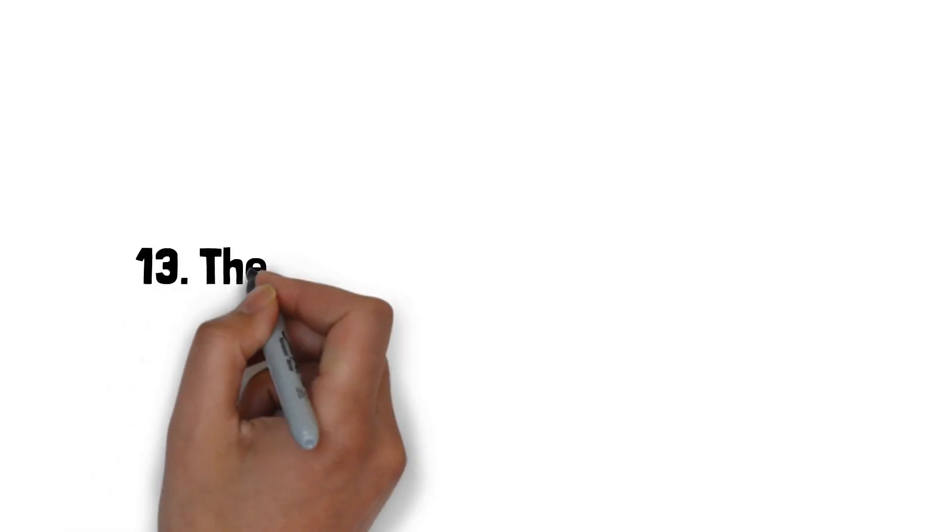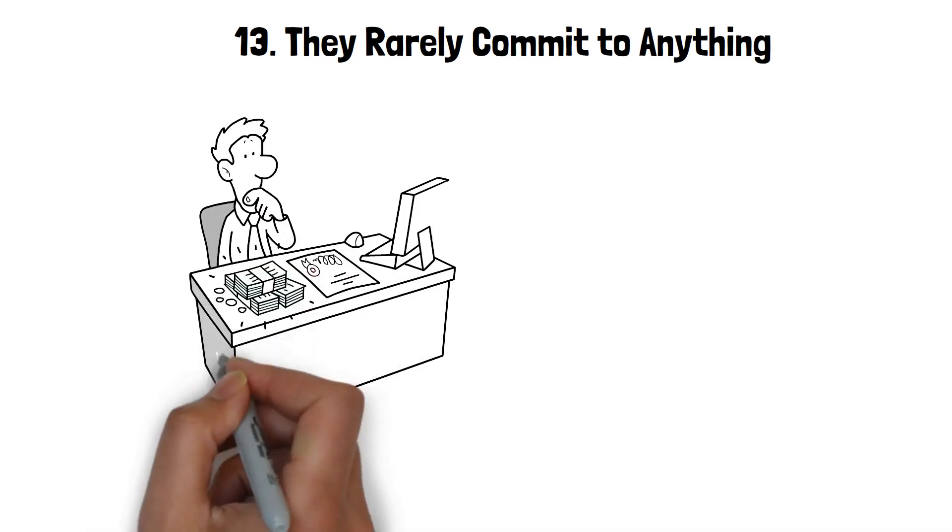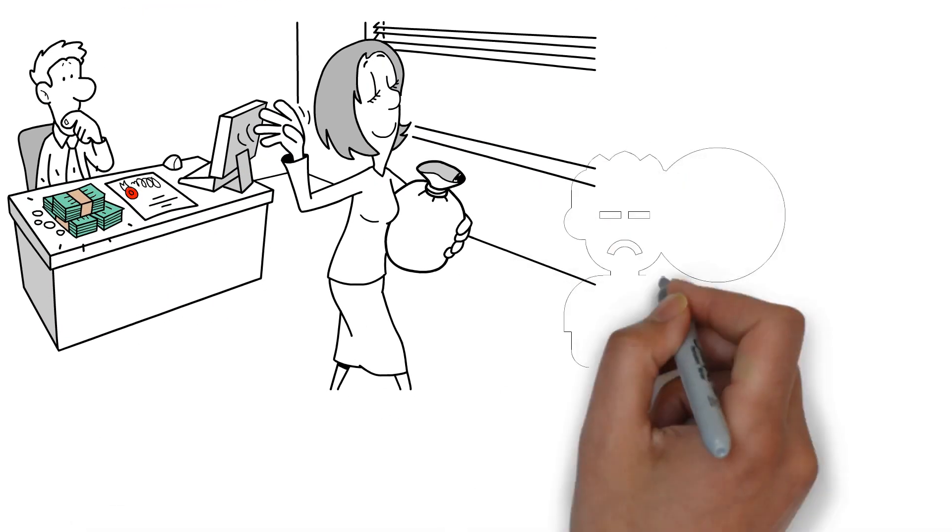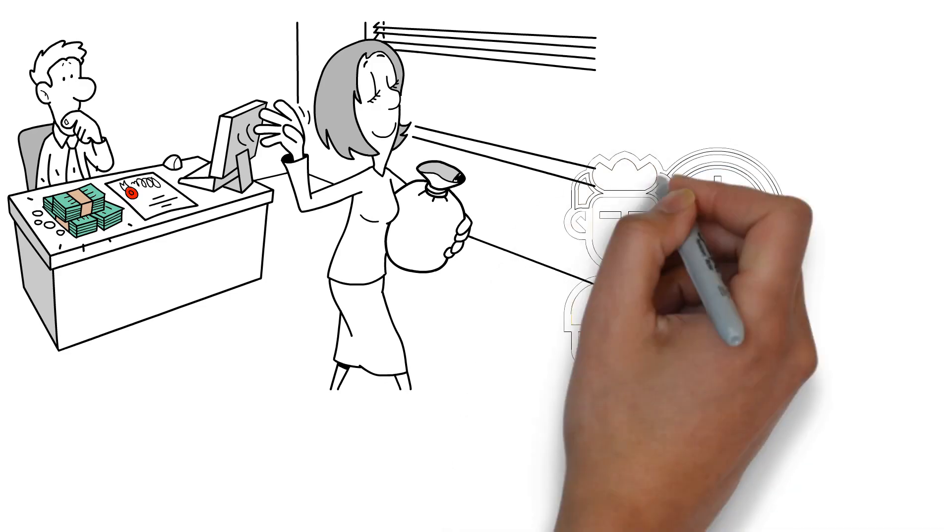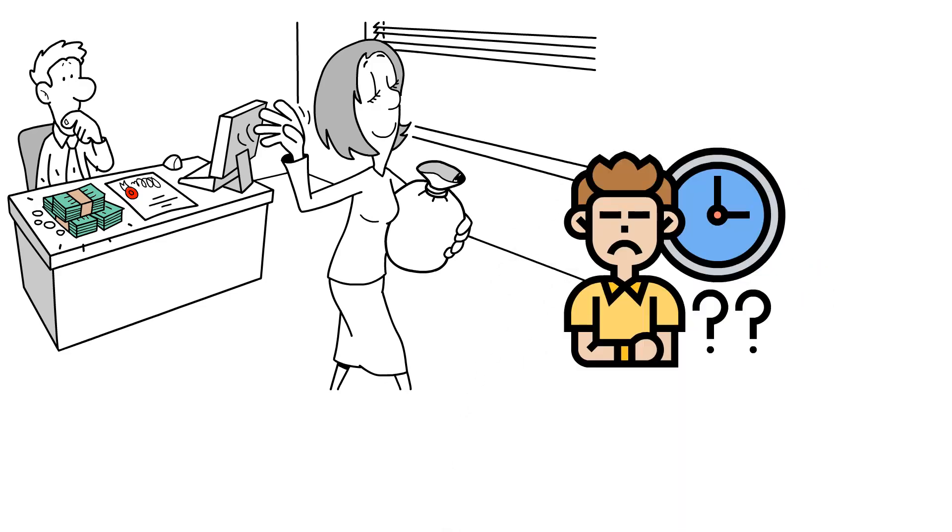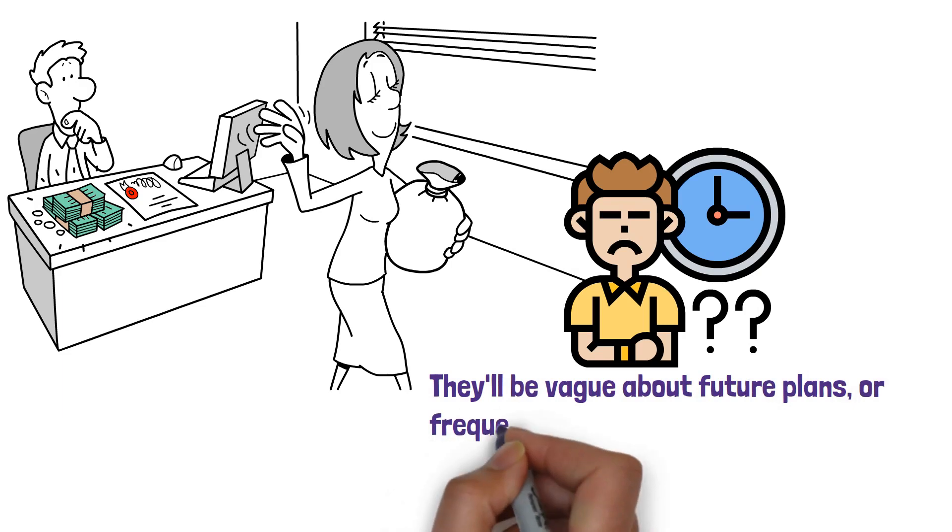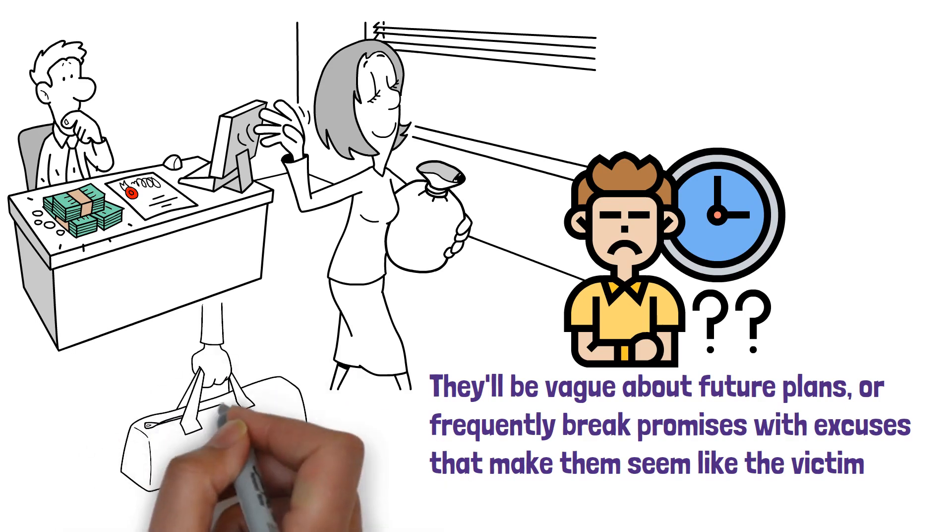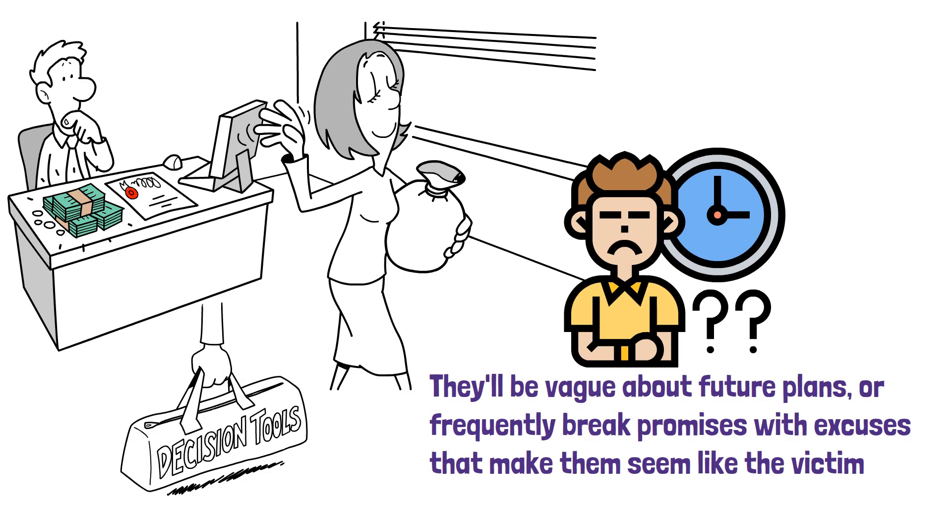13. They rarely commit to anything. Be it plans, decisions, or promises, a manipulator will avoid commitment. This keeps you waiting, hoping, and more importantly, under their control. They'll be vague about future plans, or frequently break promises with excuses that make them seem like the victim. This uncertainty keeps you off balance, making it hard for you to make decisions or move forward without their guidance.